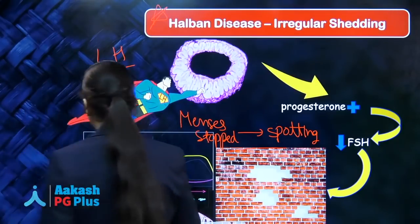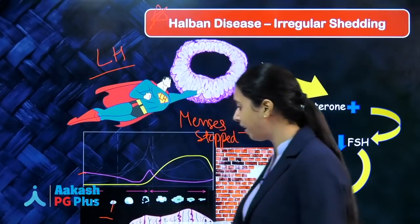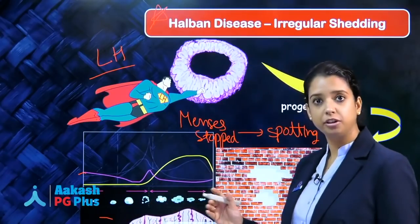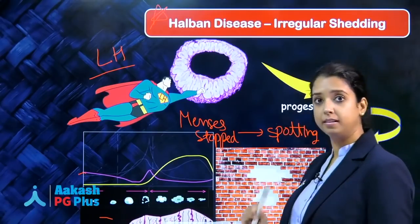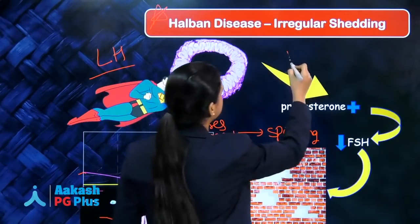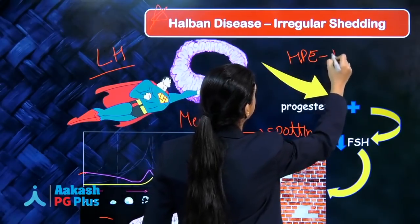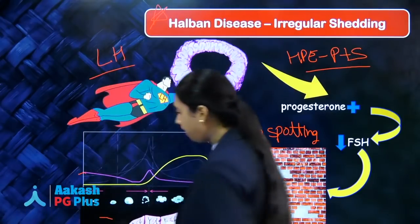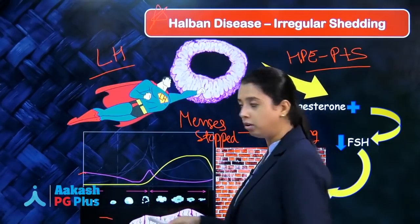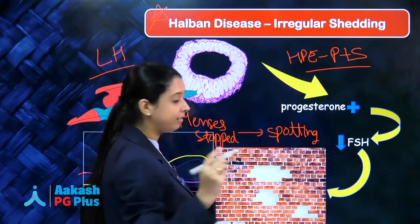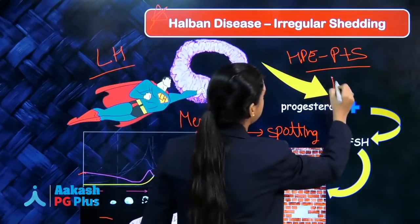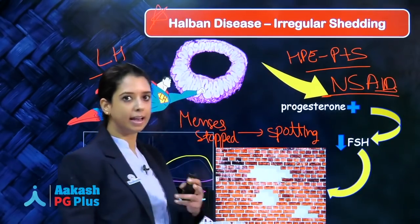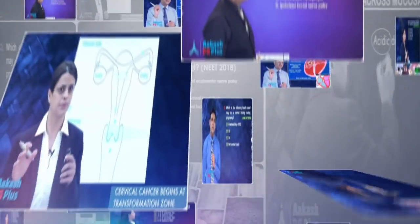If you do histopathology because the patient is having spotting, you will find that since estrogen is not sufficient and progesterone is persistently being secreted, the histopathology will characteristically show both proliferative plus secretory endometrium. Normally at this point we should have only proliferative histopathology, but we will have proliferative plus secretory. The treatment of Halban's disease is NSAIDs.